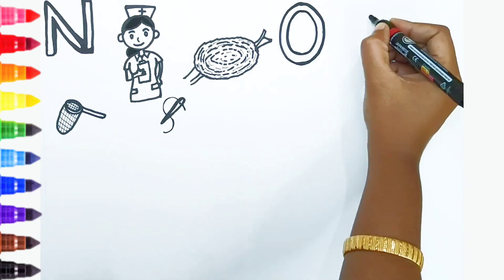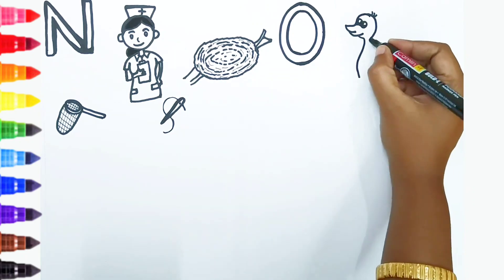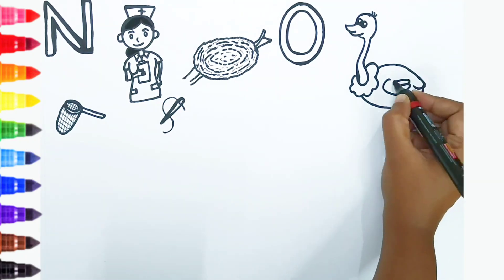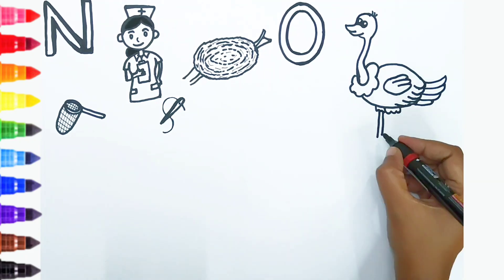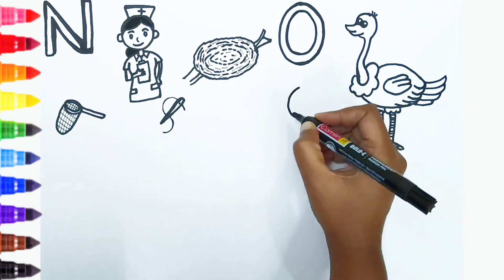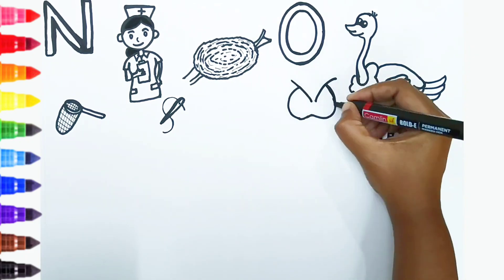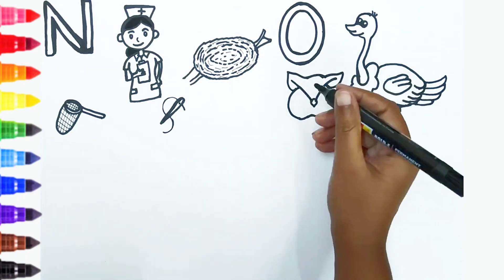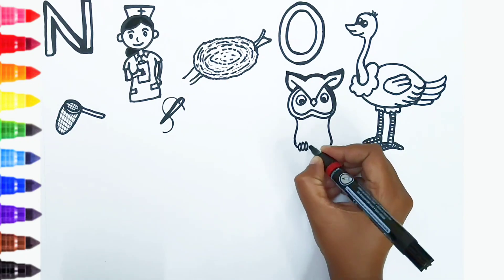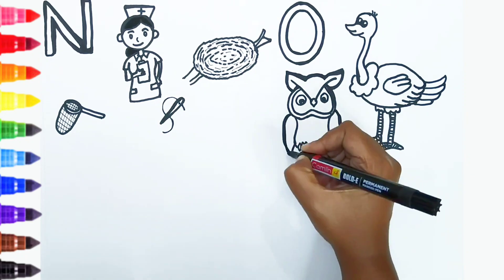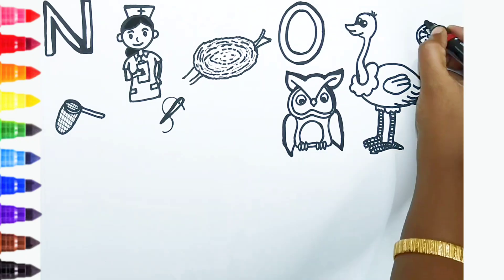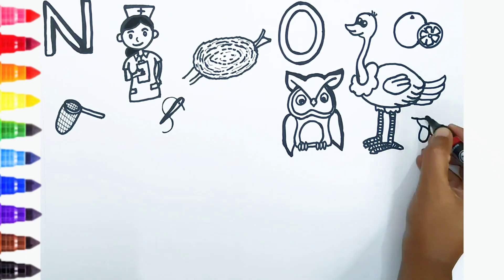O. O is for ostrich. O is for orange. O is for olives.